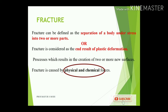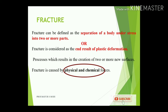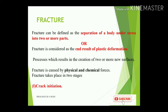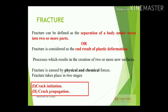Fracture is generally caused by physical or chemical forces. Physical forces include tensile force or shear force acting onto the body, converting it into two or more parts. Chemical effects such as corrosion or chemical reactions on the metal can also cause fracture. Fracture takes place in two stages: first, crack initiation, and second, crack propagation — once a crack is initiated, it always propagates.